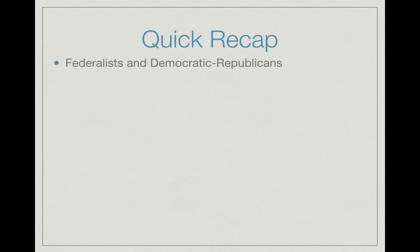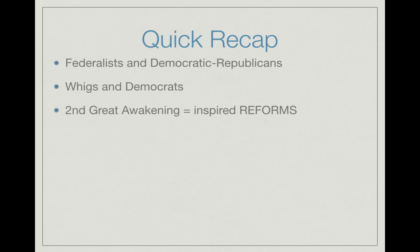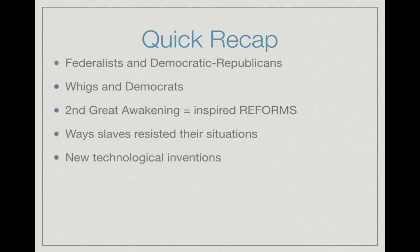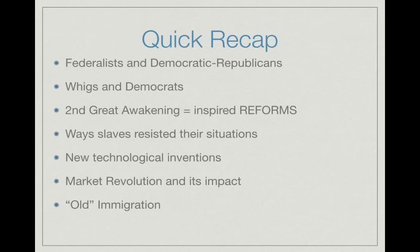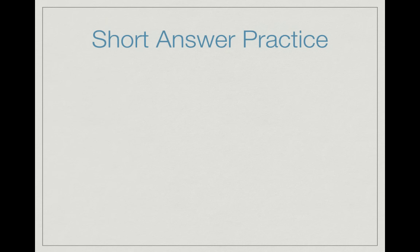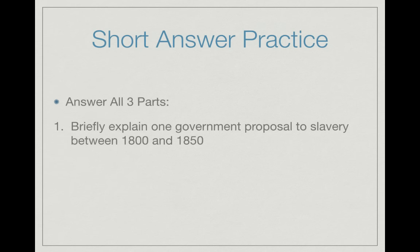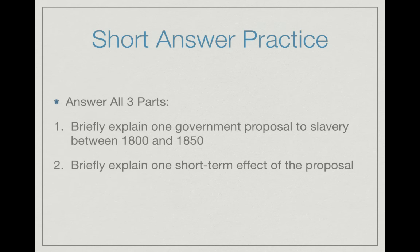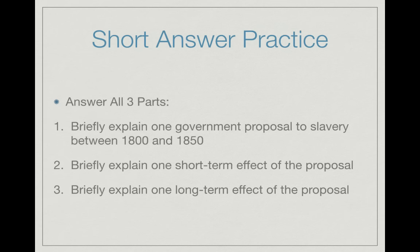Quick recap: know the Federalists and Democratic-Republicans, as well as Whigs and Democrats. The Second Great Awakening inspired reforms. Be familiar with the ways slaves resisted their situations, the many new technological inventions and the impacts of the Market Revolution — more goods were made outside the home. Know old immigration: Germans and Irish, and where they settled. Know the Missouri Compromise and the American System. Short answer practice: briefly explain one government proposal related to slavery between 1800 and 1850, one short-term effect, and one long-term effect — use the Compromise of 1820.